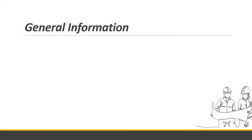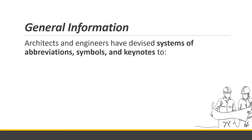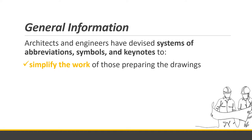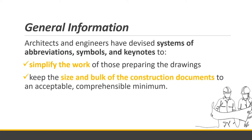In preparation of working drawings for building construction, architects and engineers have devised systems of abbreviations, symbols, and keynotes — first, to simplify the work of those preparing the drawings, and also to keep the size and bulk of construction documents to an acceptable, comprehensible minimum. Since drawing plans are represented by symbols, it made the making of drawing plans easier. Every aspect of the plans — like the door, the floor plan, the electrical layouts, the plumbing system — is all represented by symbols. So it makes the floor plan easier to make and smaller in size, compared to if everything were written out like a book.